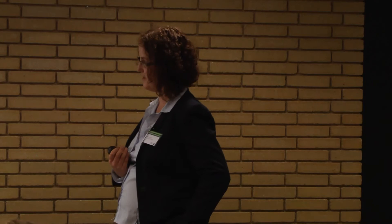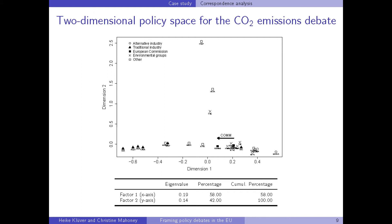The correspondence analysis identified a two-dimensional policy space, where the first dimension accounted for about 58% of the association and the second about 42%. Most interest groups oppose each other on the first dimension, which we term the pro-anti-environmental protection dimension — essentially about how strong the reduction target should be. A couple of groups, notably the press groups, have a strong stake on the second dimension. The Commission is seen moving from the first to the second time point towards the traditional automobile industry, suggesting the traditional automobile industry was successful in its framing efforts.